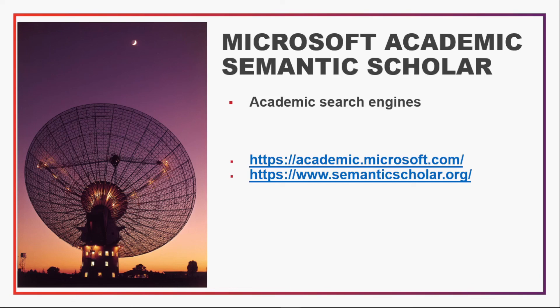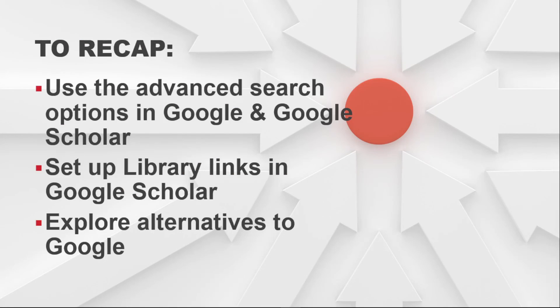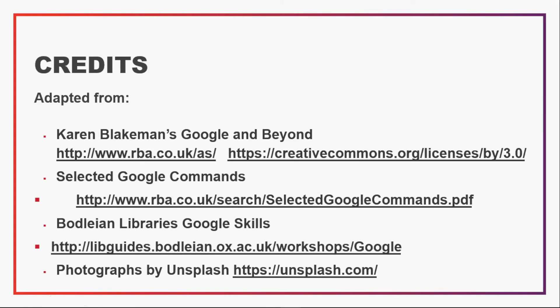Semantic Scholar has a very good author map and the ability to pull out figures and tables. To recap what we've covered: we've shown you how to use advanced search options and commands in Google and Google Scholar, how to set up library links in Google Scholar, and explored a couple of alternatives to Google. Thank you for watching this video on Google search skills — please get in touch with the library if you have any questions. We have a wealth of resources on our website and hope to see you in the next video.